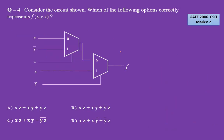Moving on to question number 4, asked for 2 marks in GATE 2006. Again we have to find out the implemented function F. Writing the equation for an intermediate point A: A = X·Z bar + Y bar·Z. Then F = A·Y bar + X·Y. Substituting the value of A: X·Z bar·Y bar + Y bar·Z·Y bar + X·Y, which simplifies to X·Y bar·Z bar + Y bar·Z + X·Y.